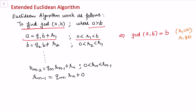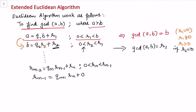If r1 is not equal to zero, we move to the second step and divide b by r1, leaving remainder r2. If r2 equals zero, then the GCD of a and b equals r1. If not, we continue in this manner until the last remainder is equal to zero, and the last divisor gives us the GCD. So from the last step, GCD of a and b equals rn.